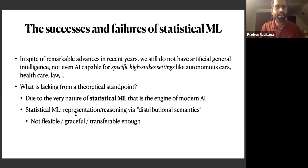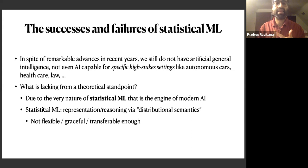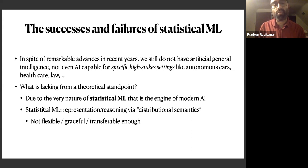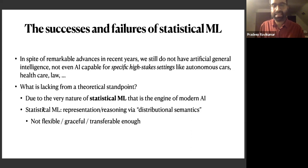Statistical machine learning, as you can see from the word statistical, is representing information in the form of distributions, and that's what it uses to reason as well. The main problem with such distributional semantics, as they call it, is that it's not flexible enough for complex settings. It's not graceful enough in the sense that it's not robust, it's a little bit brittle, and it's not transferable enough — you train it in one setting, but then it does not transfer to even a slightly modified setting.